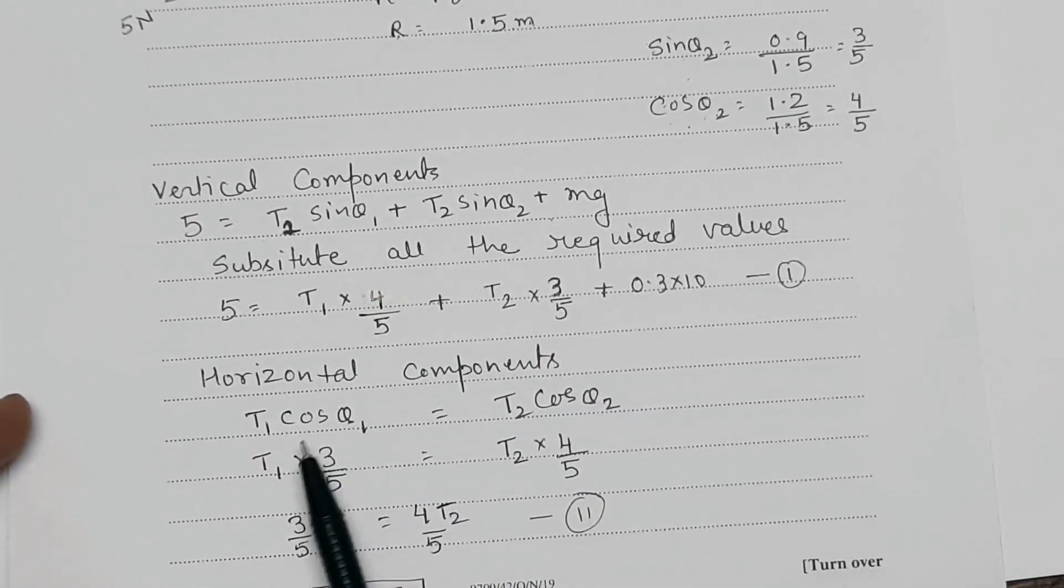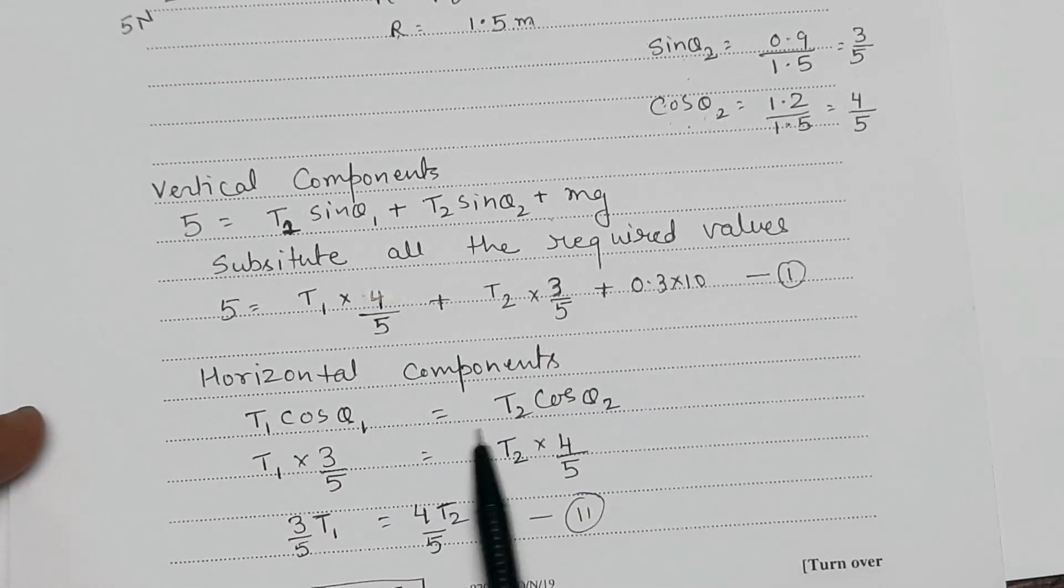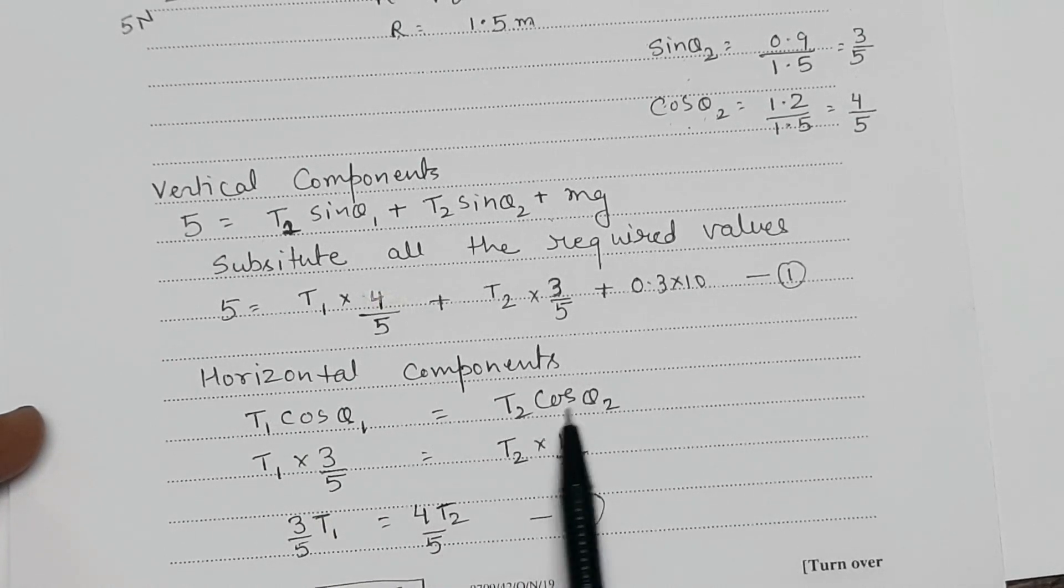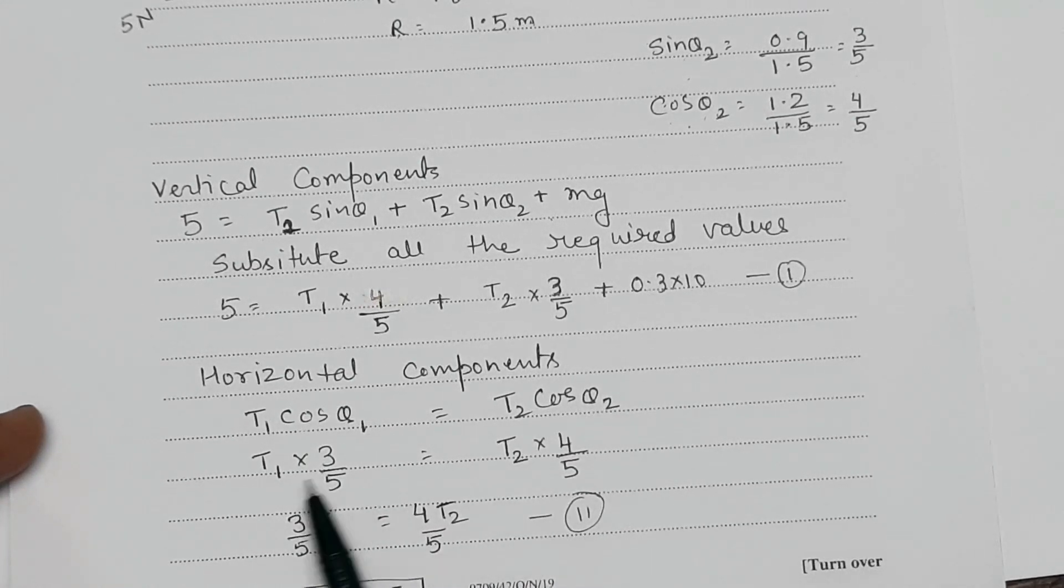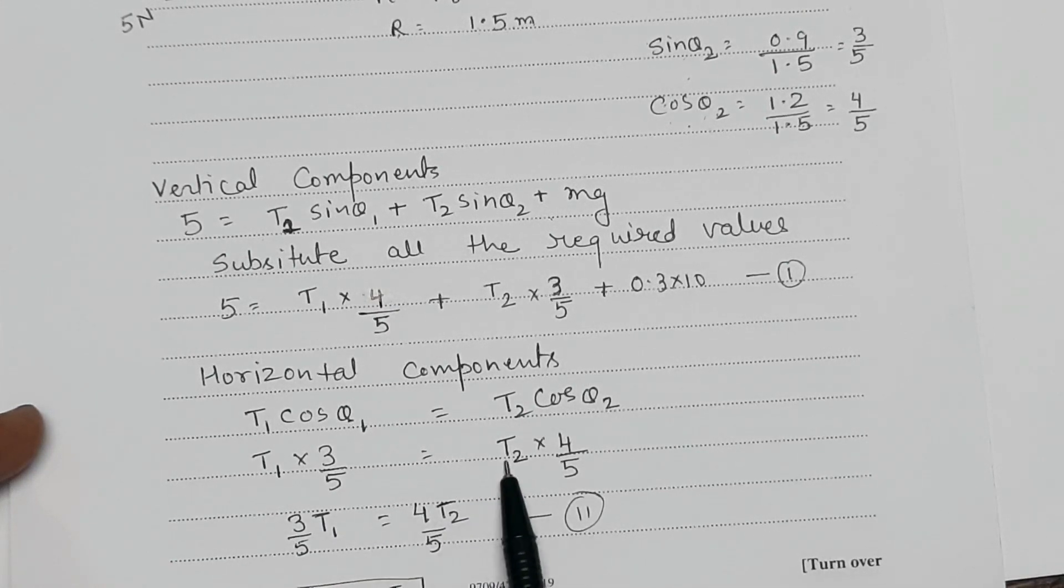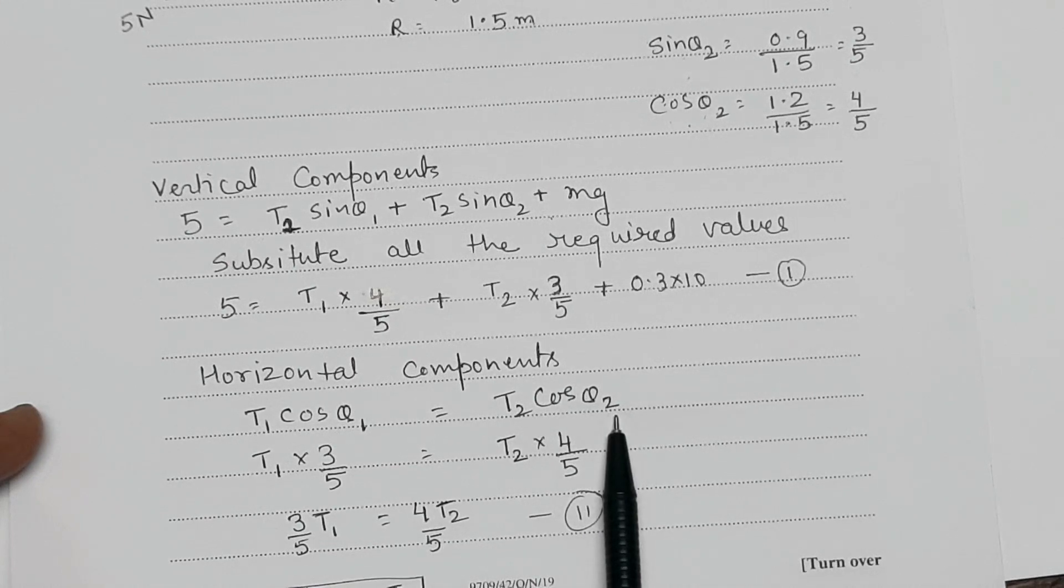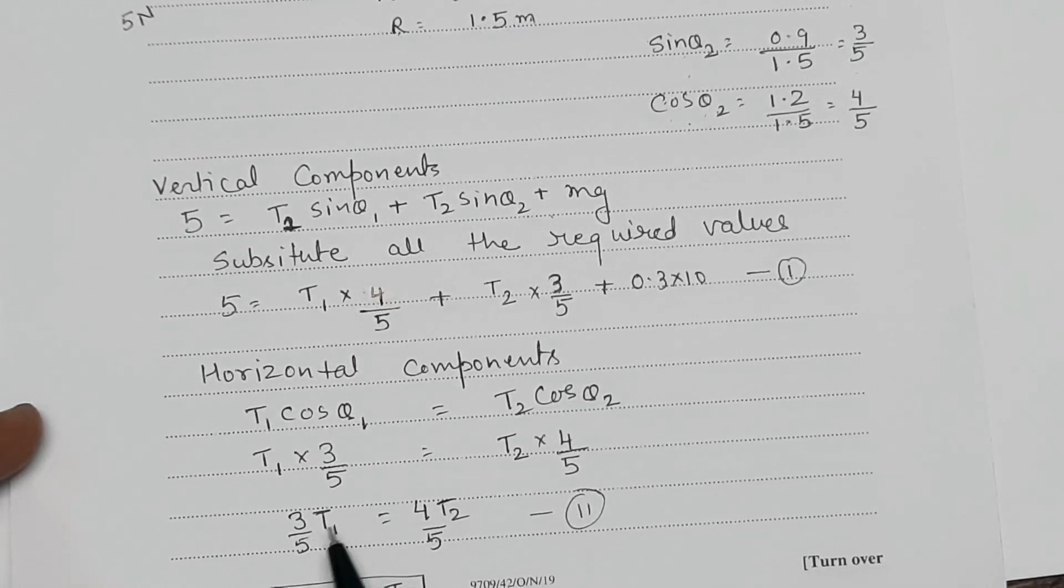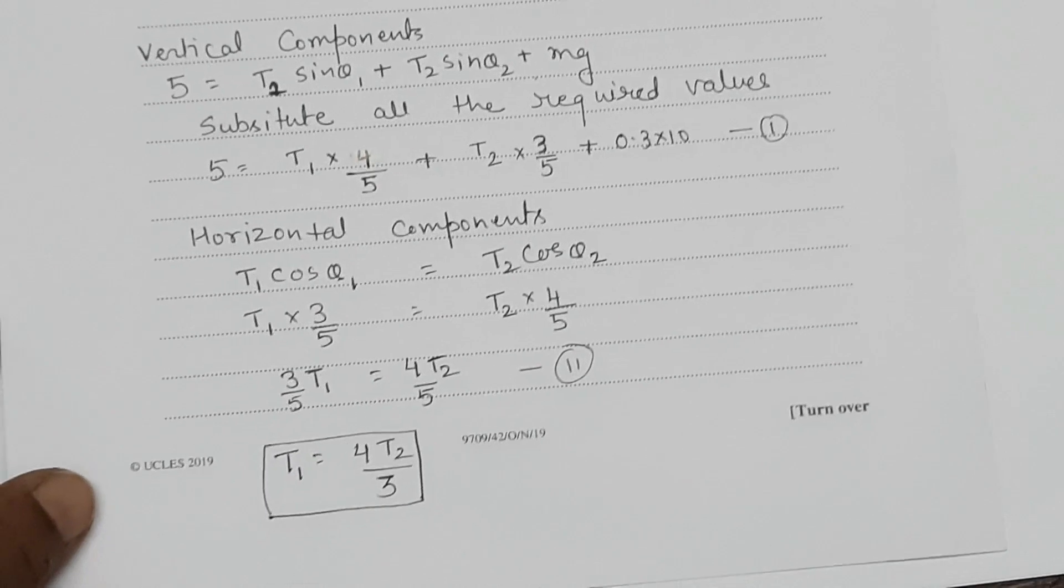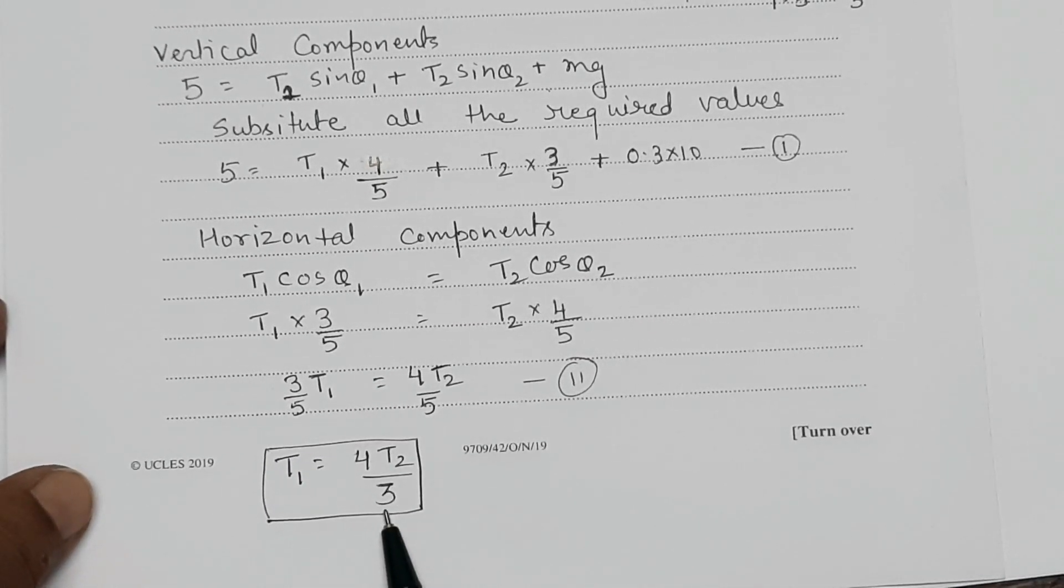The horizontal component that was equal and opposite to each other T1 cos theta 1 will be equal to T2 cos theta 2. The T1 into 3 by 5, this is the value for theta 1, and T2 into 4 by 5, this is the value for cos theta 2. So when we will do further we will get that 3T1 by 5 which will be equal to 4T2 by 5. So the value for T1 will get 4T2 by 3.